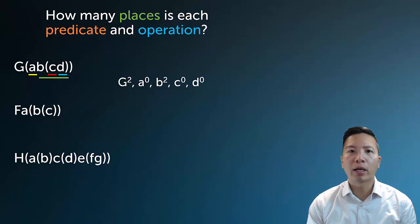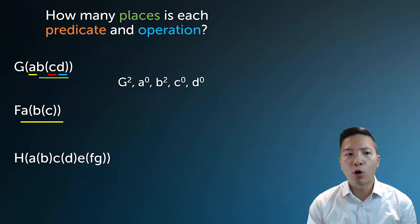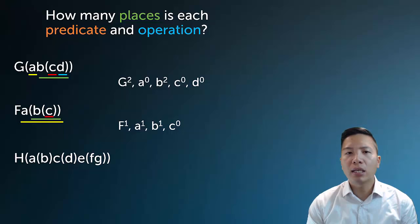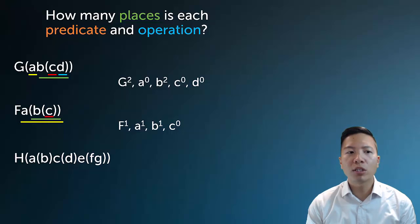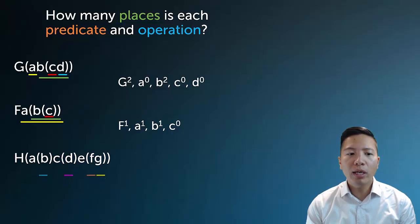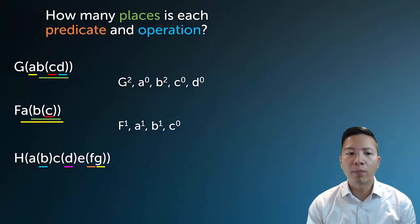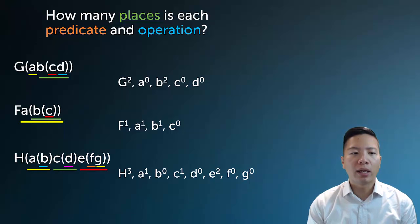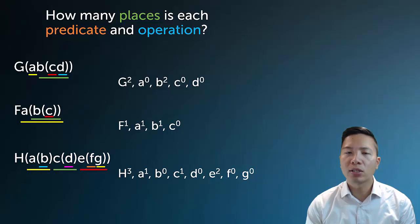What about F, A bracket, B bracket C close, close? Going outside in: F is a single-place predicate. Single-place predicates do not have a bracket opening on their terms, which is why we immediately know F is single-place. For the H example, H has brackets so it's more than one place. Going inside out, I can spot all name letters because they don't have brackets opening next to them. Then working backwards, A is one place, C is one place, E is two place, and H actually has three slots occupied by three separate completed operations.